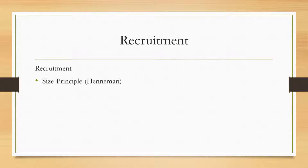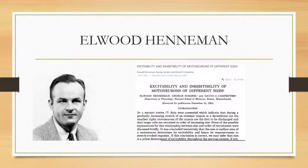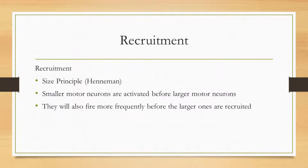The first thing to talk about is recruitment. What do we mean by this? Here we're talking about the Seiss principle or the Henneman principle, named after Elwood Henneman, an American neurophysiologist who described this in the 1960s. Smaller motor neurons are activated in an orderly manner before the larger motor neurons, and they fire more frequently before the larger ones are recruited into being activated.